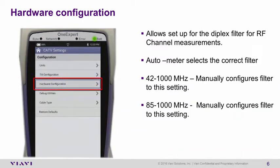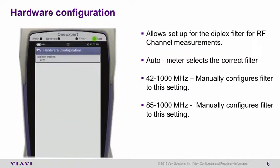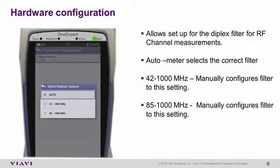Opening the Hardware Configuration allows for the setup of the diplex filter to auto or manual. The default from the factory is set to auto. By touching the diplex options, the other settings are manual for 42 MHz to 1 GHz and 85 MHz to 1 GHz.